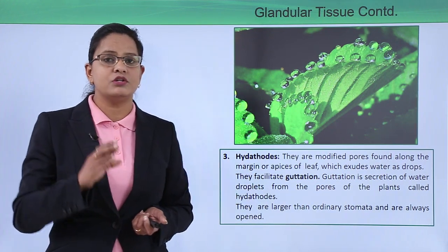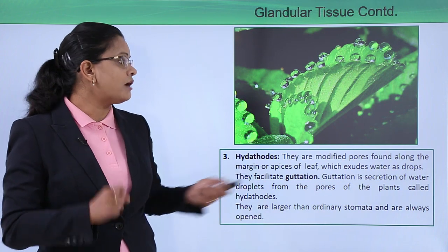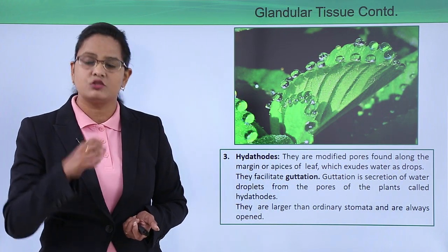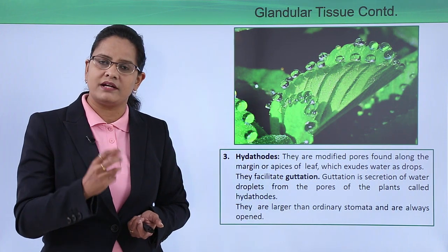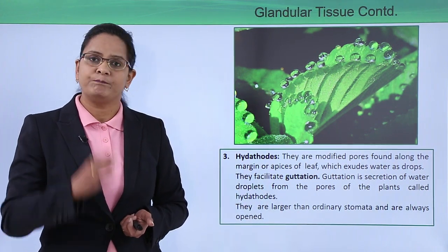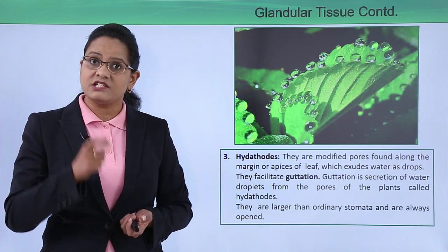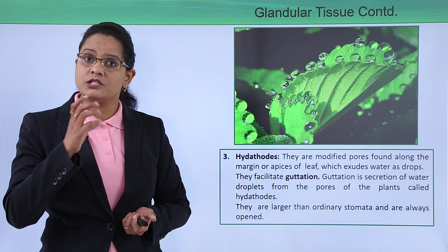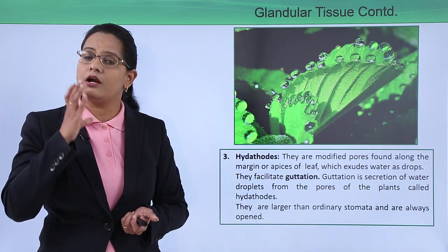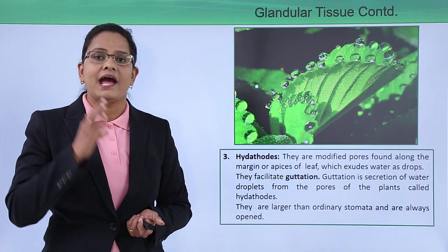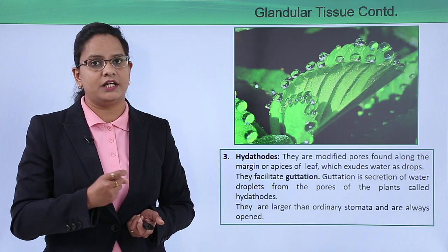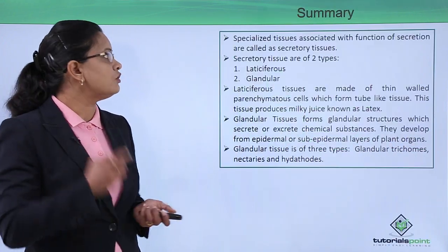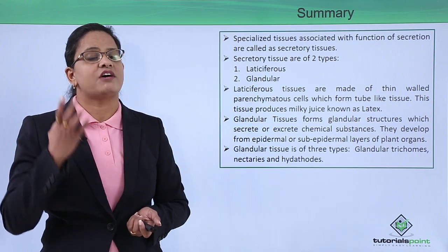The third type is hydathodes, which are modified pores found along the margins and apices of the leaf. They secrete extra water from the plant, apart from transpiration through stomata. The process of water secretion through these pores is known as guttation. Hydathodes are bigger in size than stomata and always remain open, unlike stomata which have a mechanism of opening and closing. Hydathodes are also a type of glandular tissue.